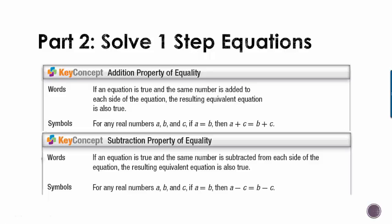So if we read the fancy stuff, it says if an equation is true and the same number is added to each side of the equation, the resulting equivalent equation is also true. So let's say we start with something like x equals 3, and this is true. If you add the same thing to both sides, plus 2, plus 2, then x plus 2 equals 5 is also true. And chances are you can already solve this in your head. We would subtract 2 from both sides, and we would end up with this, that x would have to equal 3 in that case. The subtraction property works exactly the same way, except you're adding a negative number.